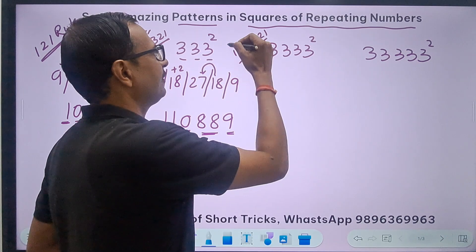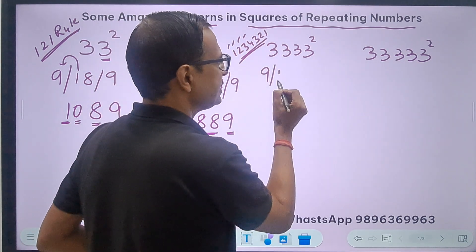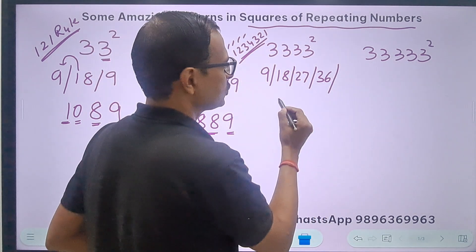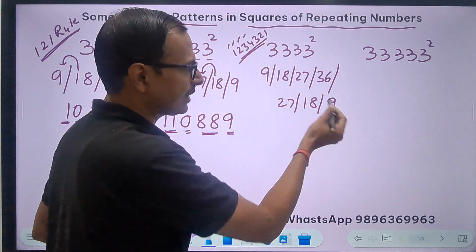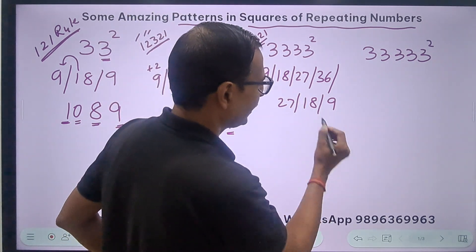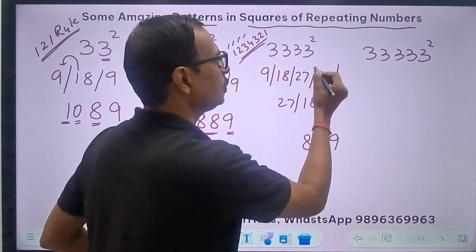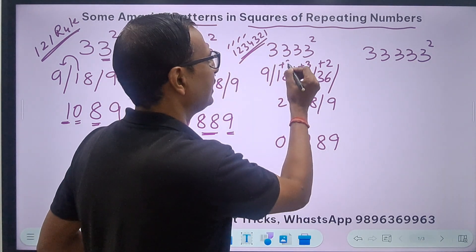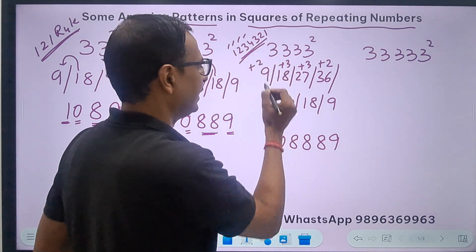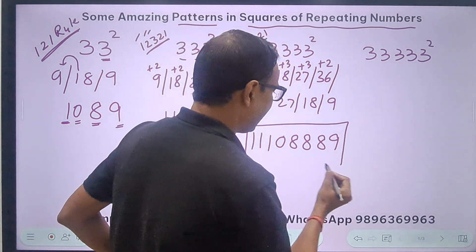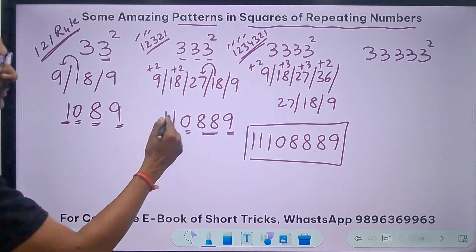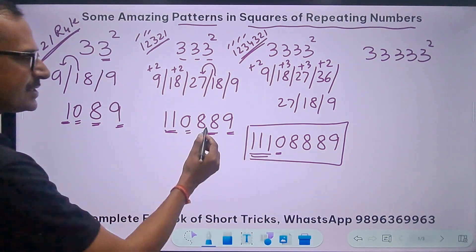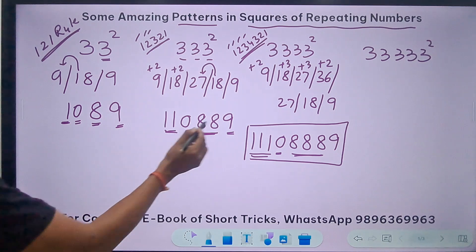For 3333 squared, I go up to the fourth multiple of 9: 9, 18, 27, 36, then back: 27, 18, 9. Starting from the unit digit: 9; 8 with 1 carry; 28 gives 8 with 2 carry; 3 carry; 3 carry; 30 gives 0 with 3 carry; 21 gives 1 with 2 carry; then 11. The result is 11108889 — wow, the pattern holds: three 1s, a zero, three 8s, and one 9!